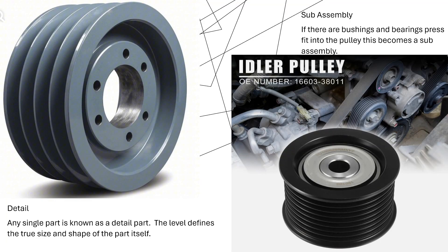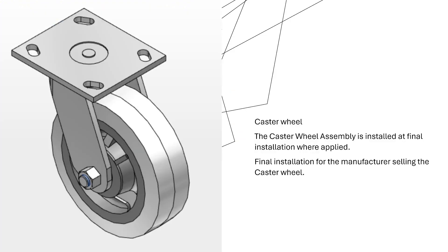A pulley itself is a detail part, but if the pulley has bushings or bearings press-fit inside of it, then it also becomes an assembly. You might think of it as a detail part, but once there are two pieces making up one unit, that unit becomes an assembly.